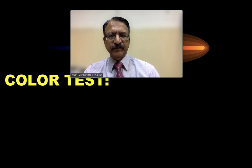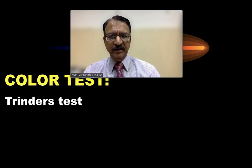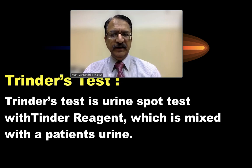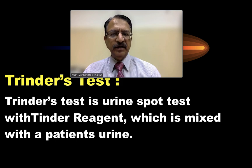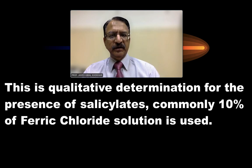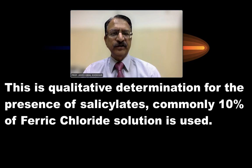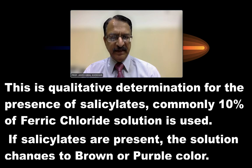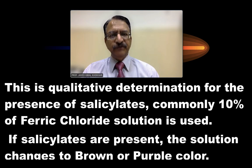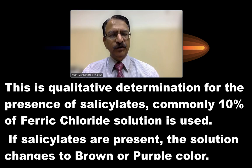For qualitative tests, colour tests are used — the Trinder's test, the Reinsch test, and the Marsh test. The Trinder's test is a urine spot test done with Trinder's reagent mixed with the patient's urine; the colour change is immediate. This is a qualitative determination for the presence of salicylates: 10% ferric chloride solution is used, and if salicylates are present, the solution changes to brown or purple colour — pour a few drops into 1 ml of urine and a brown or purple ring appears immediately.